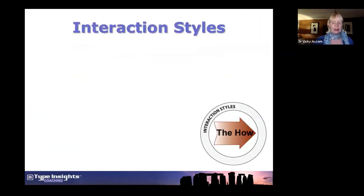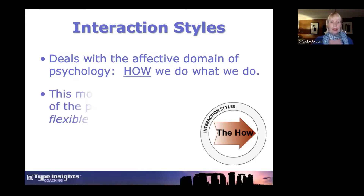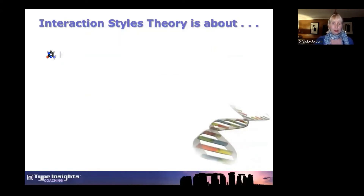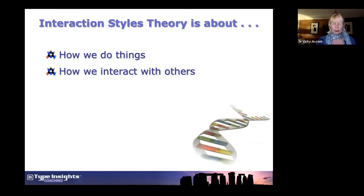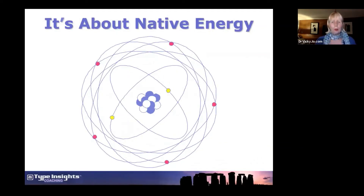Interaction styles tells us the 'how' of our being. It deals with what is termed the affective domain of psychology, and it describes how we do what we do. This model describes aspects of the personality that are flexible — it's not a rigid model, not a box we're trying to put anybody in. It describes how we interact with others, how we try to get things done, how we play in a group or a team, and what our basic drive is. It's about native energy, and that's why it's so important — it helps us understand what gives us energy and what takes energy away from us.